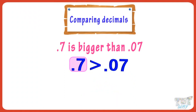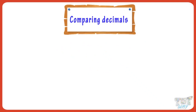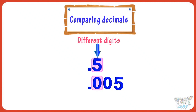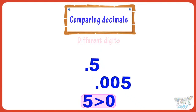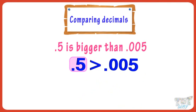Now, let's take another example. Let's compare 0.5 and 0.005. We have to start at the left and look for the first place where the digits are different. Here, the leftmost digits are different. So, comparing five and zero, we get 0.5 is bigger than 0.005.